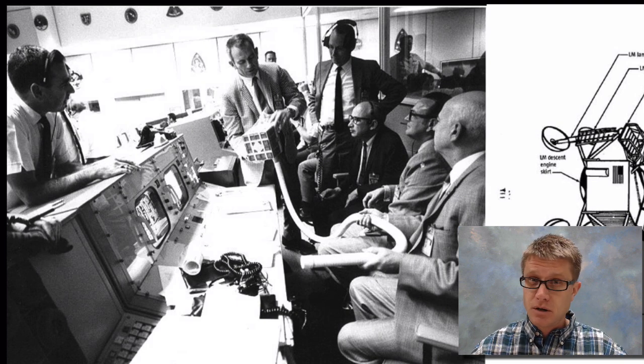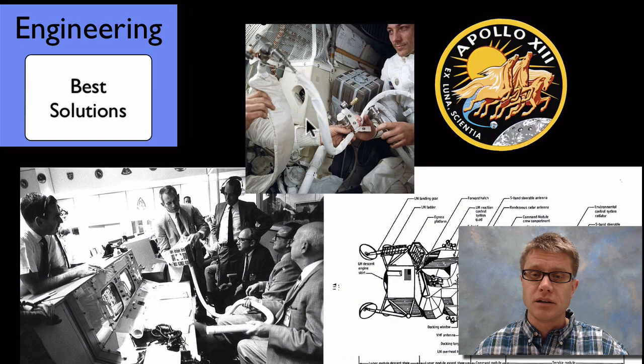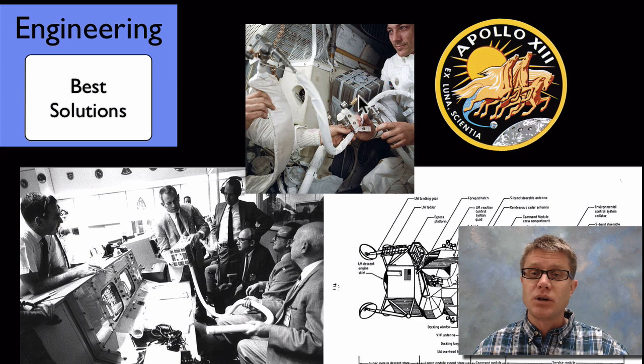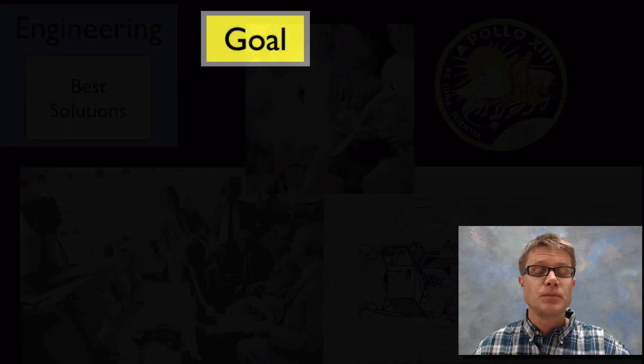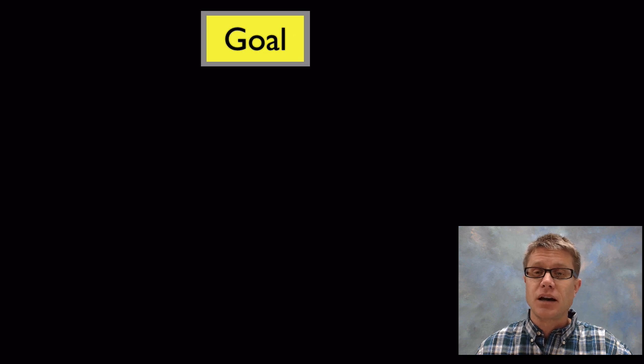They eventually took inventory of everything that was available to the astronauts and then they came up with a plan, a way to build what they call a mailbox. This way that we could really put a square peg into a circular hole. Engineering is using explanations and argumentation to come up with the best design.